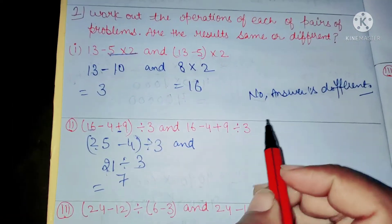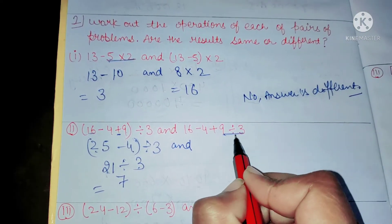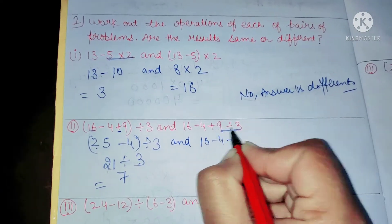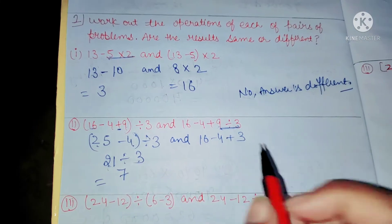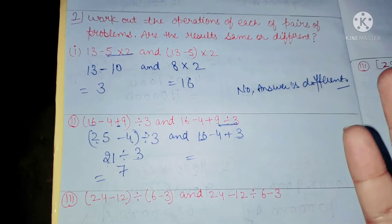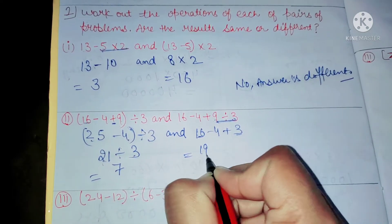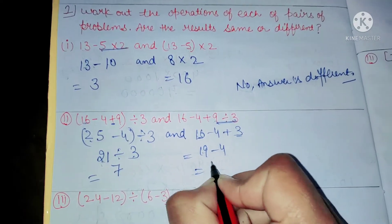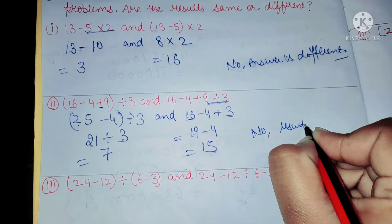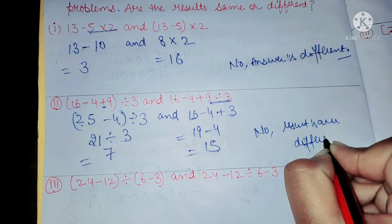Here we use the BODMAS rule. It contains division, so first we have to solve this: 16 minus 4 plus 9. 12 divided by 3 equals 4. Then we have to solve this multiplication. After multiplication comes addition. We will add: 19 minus 4 equals 15, plus 7 equals... No, results are different.